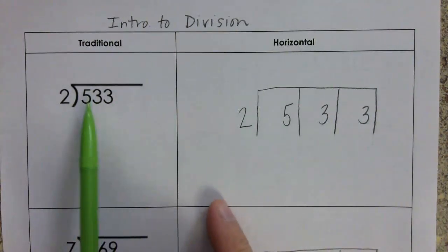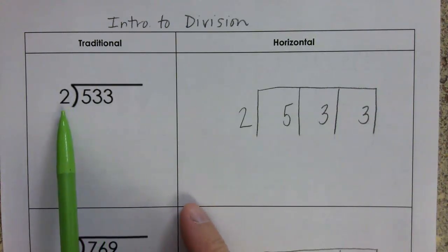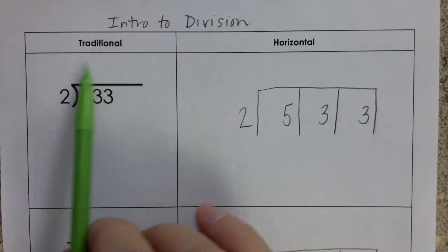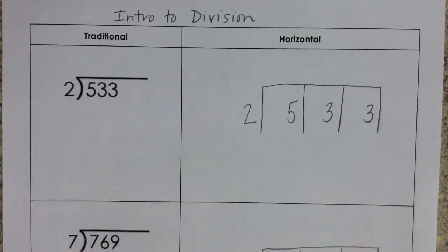The larger number that we're splitting apart is called the dividend. The number telling how many equal groups to make is the divisor, and then our answer up here is the quotient. And that quotient could or might not have a remainder.